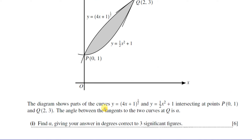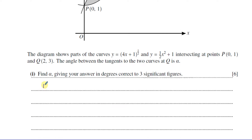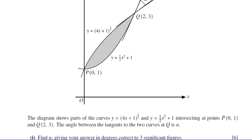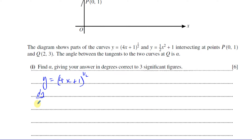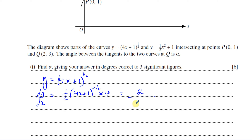For y = (4x + 1)^(1/2), we find dy/dx using the chain rule: multiply by the power to get (1/2)(4x + 1)^(-1/2), then multiply by the derivative of the inside, which is 4. That gives (1/2) × 4 = 2, so dy/dx = 2 / (4x + 1)^(1/2), which we can write as 2 over the square root of (4x + 1).